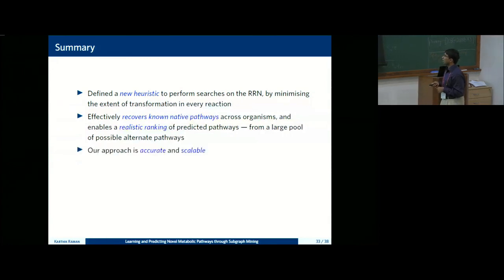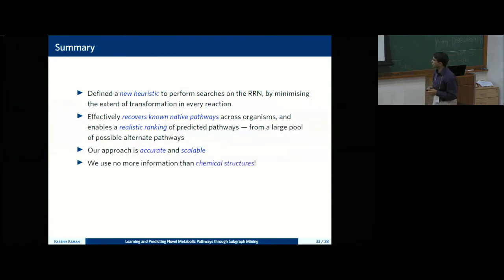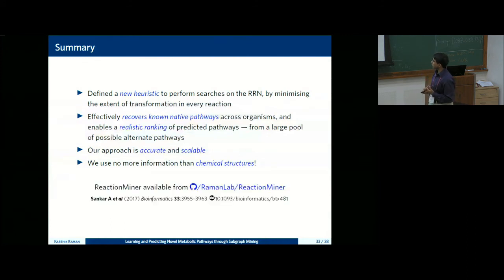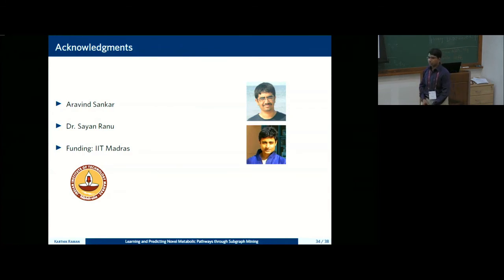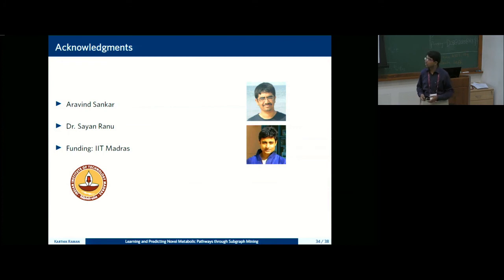We did systematic cross-validation to check scalability, and we only use chemical structures, so the method can be readily extended to other databases without needing thermodynamic data. Our tool is available on GitHub, and we are building a web server to increase adoption. The paper is published in Bioinformatics. Arvind, a dual-degree student from computer science, did most of the coding and analysis, and Shayan from IIT Madras was instrumental in implementing efficient data structures.